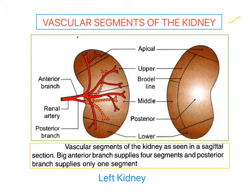Normally the kidneys are supplied by a renal artery, which is a direct branch from the abdominal aorta. The arteries are large in size since the entire blood has to pass through the kidneys for filtration. Because of the direct origin from the aorta, there is a good pressure head for filtration.